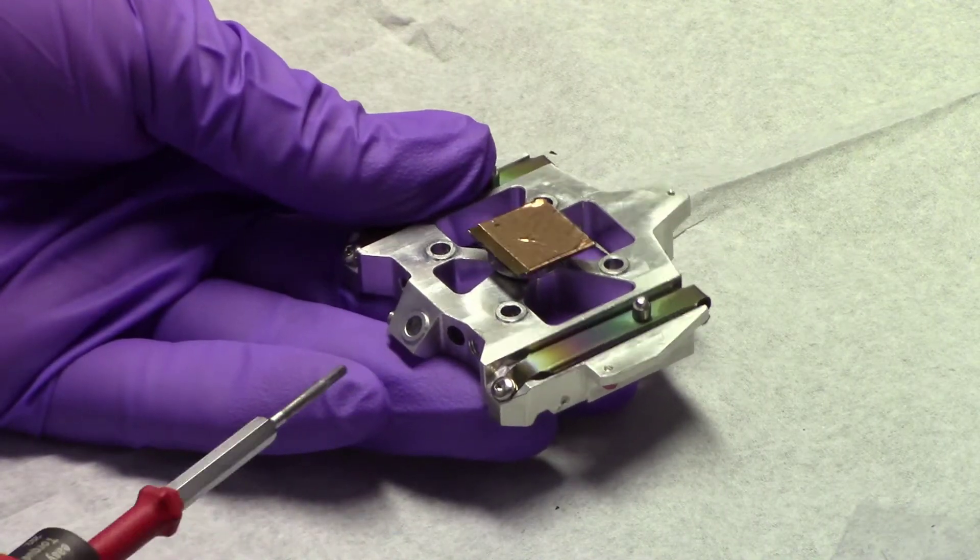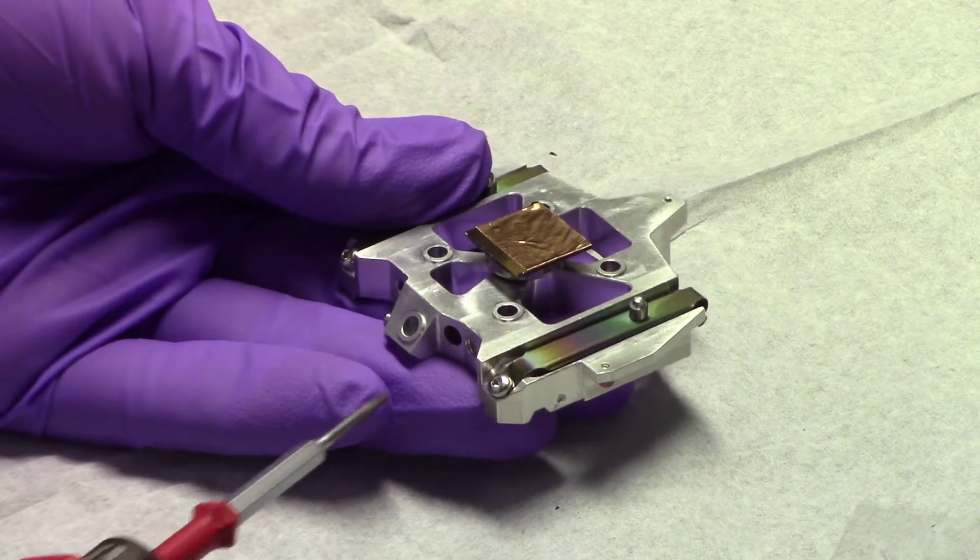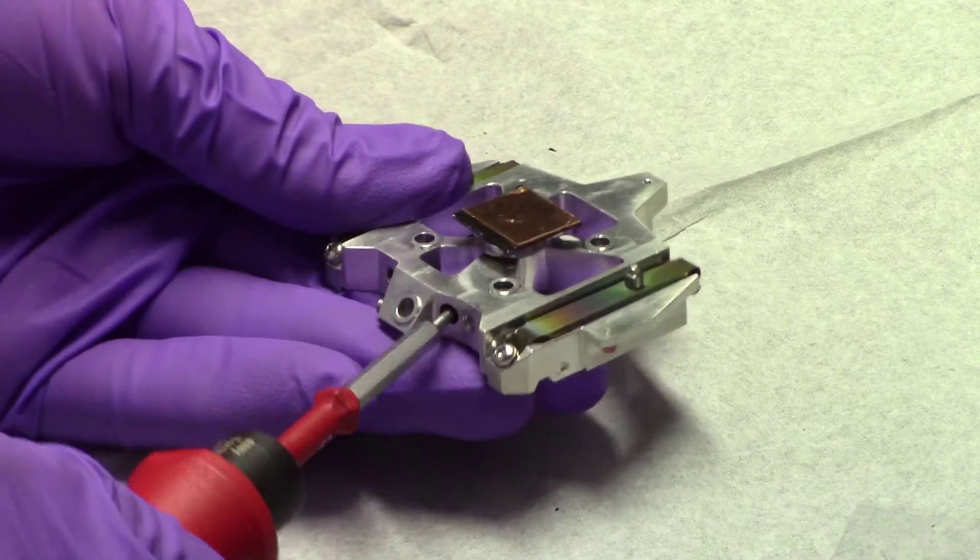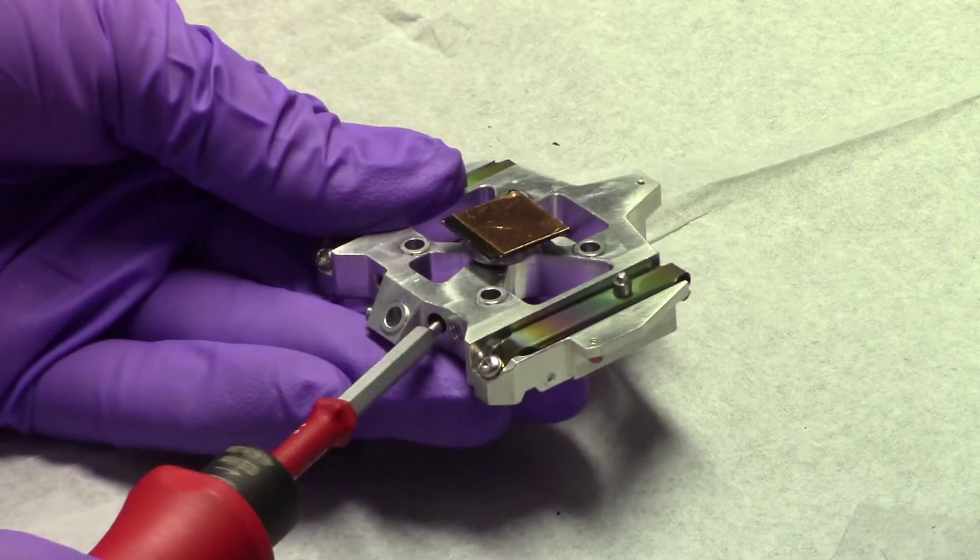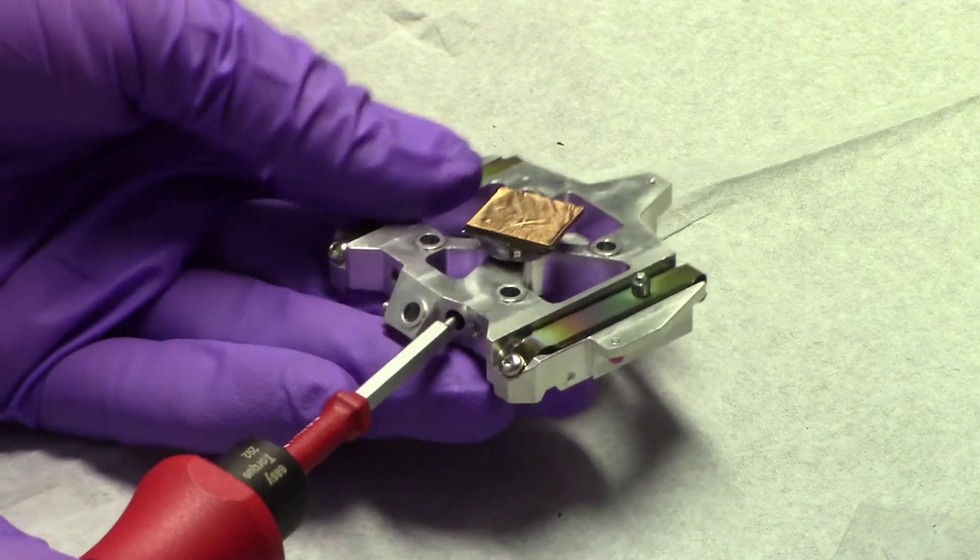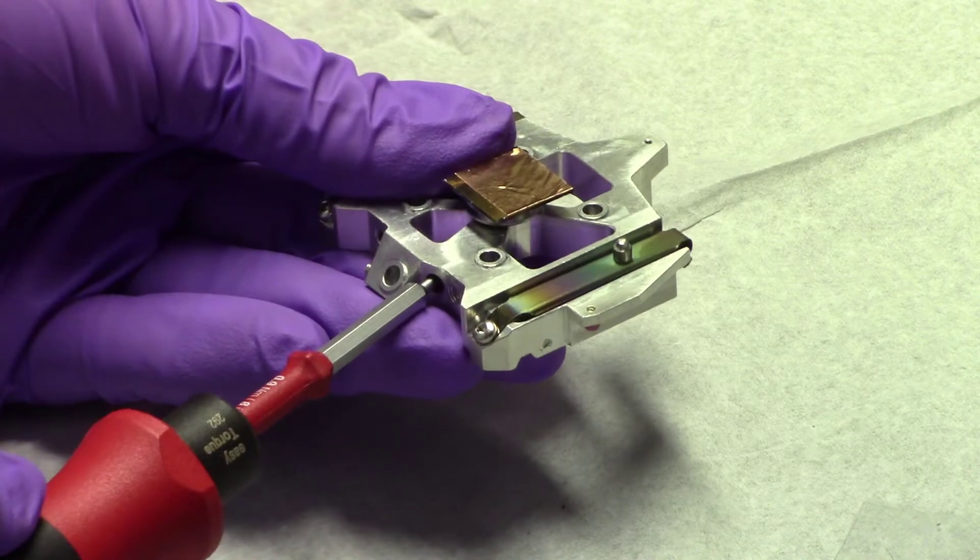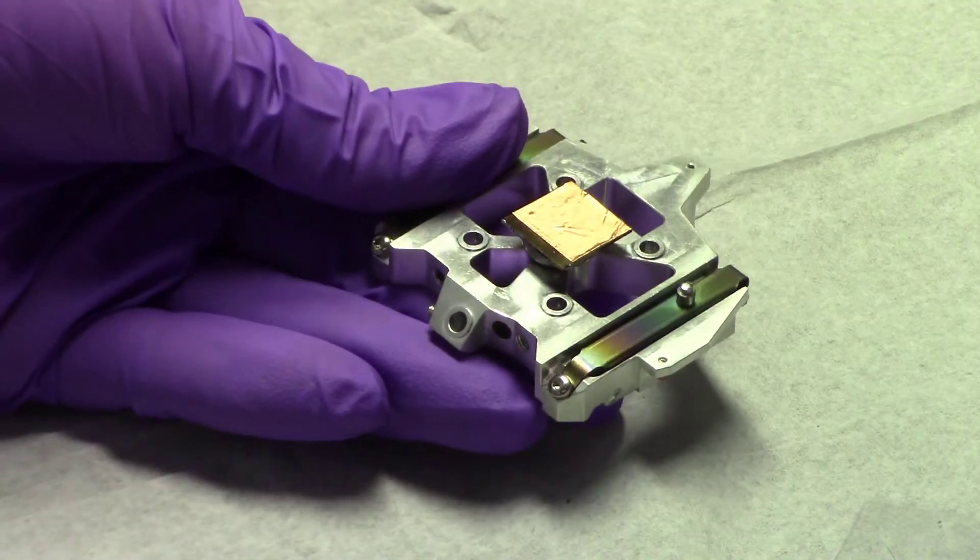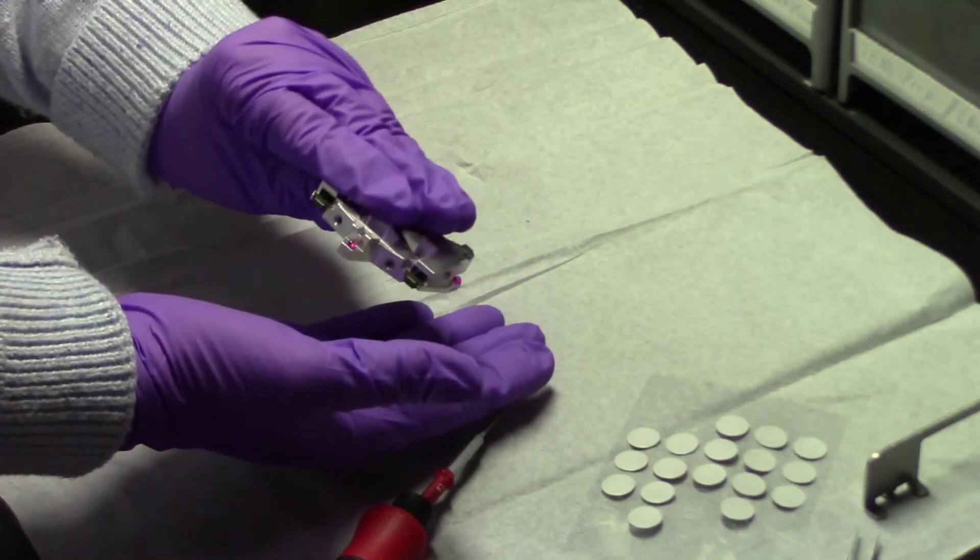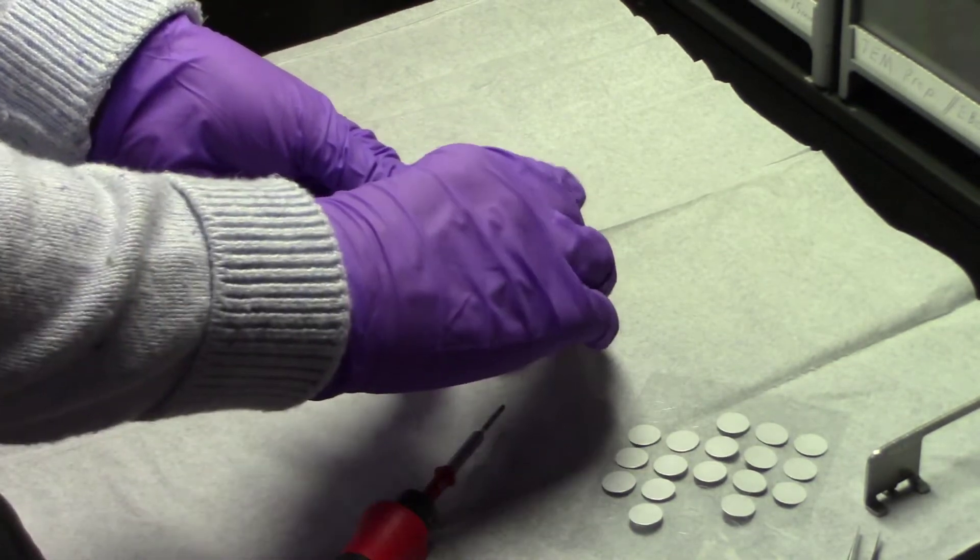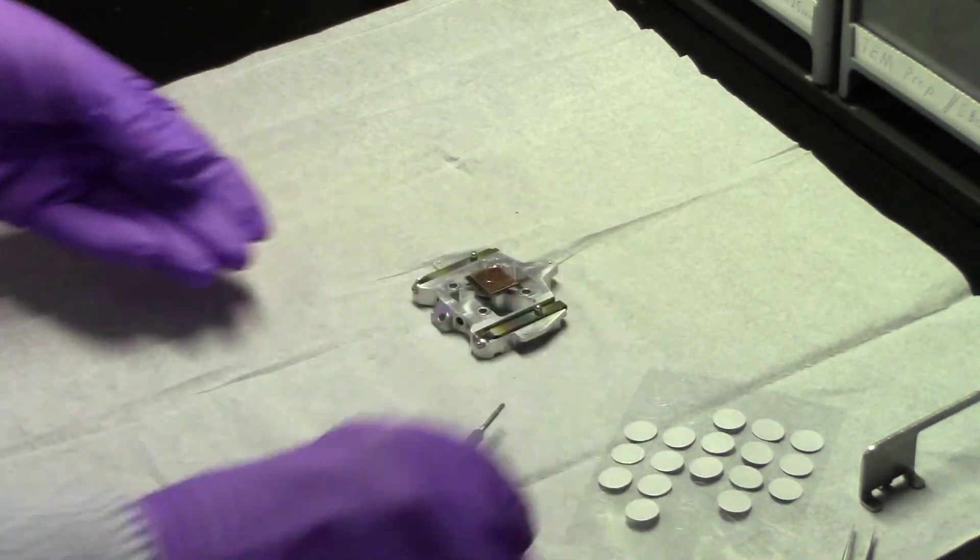Once you've determined the size and number of samples you'd like to load, use the screwdriver to gently tighten each set screw. You may want to tip the shuttle upside down to ensure that your samples do not fall out.